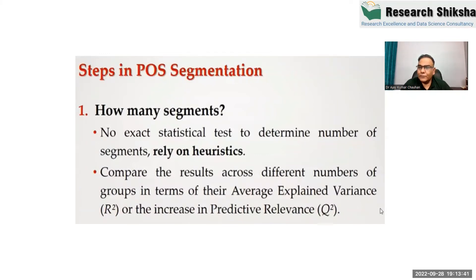In POS, we have no such formula. There is only one condition we need to check: each segment size should be more than 25% of the data. For example, if your sample size is 400, then each segment size should be more than 25% of 400, which means more than 100.